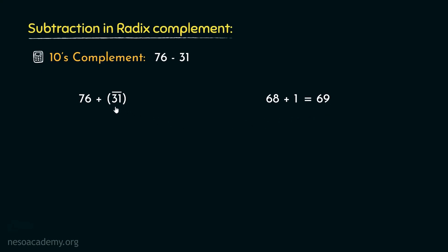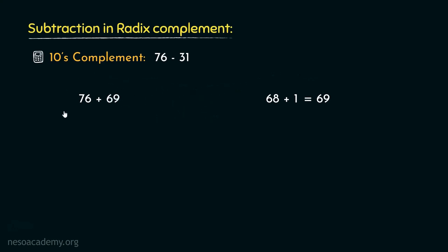Now, in place of the negative inverse of 31, we will place 69. Let's perform the addition. 6 plus 9 is 15, so we have 5 as sum and 1 as the carry. Then 1 plus 7 is 8 and 8 plus 6 is 14. So we obtained the result 145.